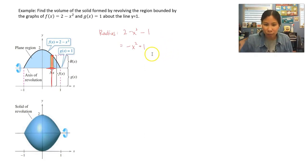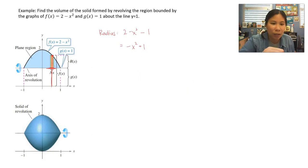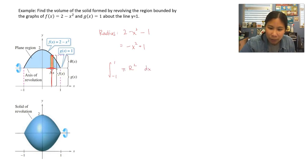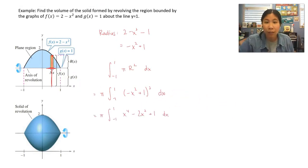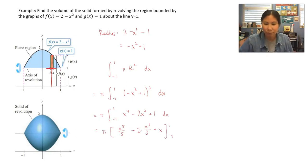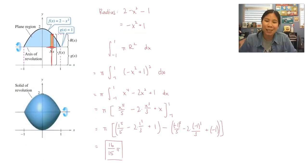If you're ever not rotating around the x-axis, you'll have to subtract the top curve minus the bottom curve for the radius. From the graph, the shaded region runs from negative 1 to 1. So we set up the integral from negative 1 to 1 of pi times (negative x squared plus 1) squared. Squaring that out gives x to the fourth minus 2x squared plus 1, and integrating gives x to the fifth over 5 minus 2x cubed over 3 plus x, evaluated from negative 1 to 1. Plugging in and simplifying gives 16 over 15 pi.